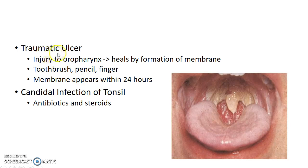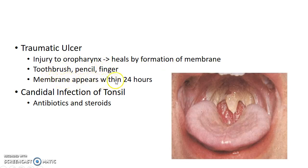Traumatic ulcer can also lead to the formation of membrane over tonsil. This is because injury to the oropharynx usually heals by formation of a membrane. Tonsils can be injured by a toothbrush, pencils, or fingers. The membrane appears within 24 hours.